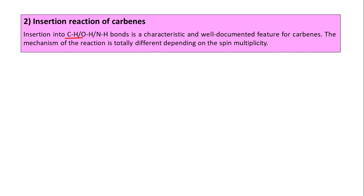So what is insertion? Insertion reaction of carbene may be insertion to a C-H bond, it may be an O-H bond or N-H bond — any type of bond can be broken and carbene will be inserted in between these two atoms. The mechanism of this reaction is totally different and depends on the spin multiplicity, whether you have singlet carbene or triplet carbene.